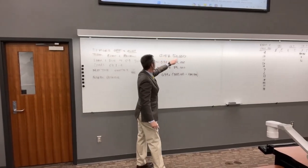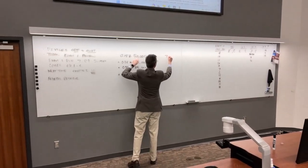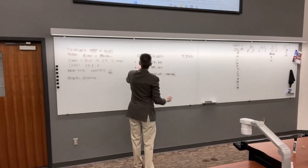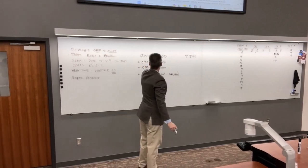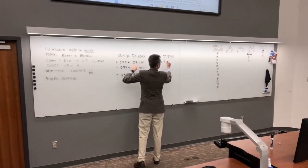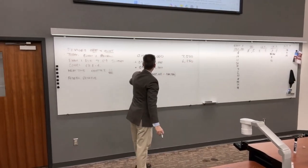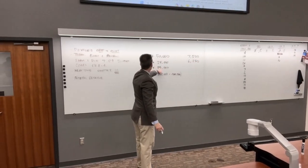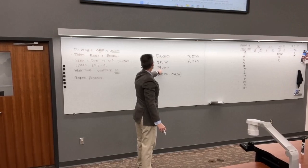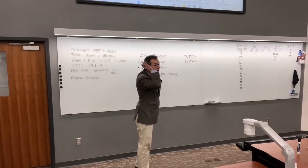So 15% of $50,000 is $7,500. 25% of $25,000 is $6,250. 34% of $25,000 is $8,500. And what is $225,000 times 0.39? $87,750.